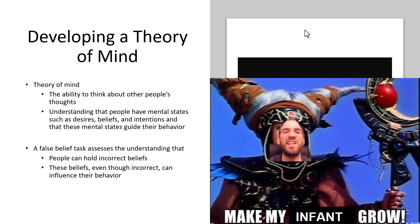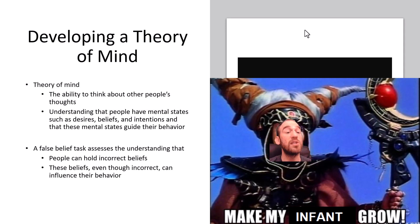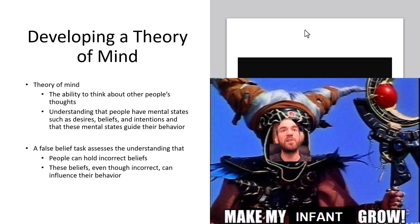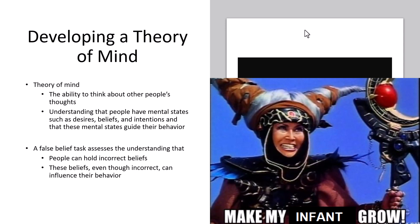Next, we'll discuss neurodiversity in the context of autism, introducing the concept of theory of mind — the ability to think about other people's thoughts and understand that people have mental states like desires, beliefs, and intentions that guide their behavior. One way this is assessed is through the false belief task, which tests whether children understand that people can hold incorrect beliefs that influence their behavior.